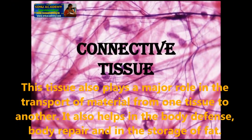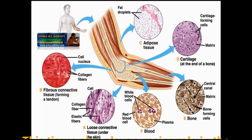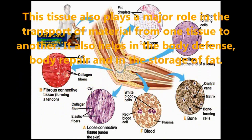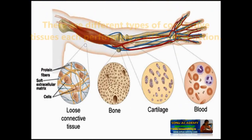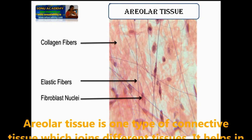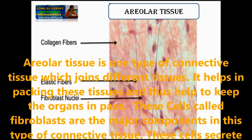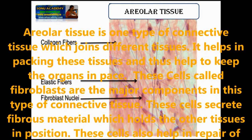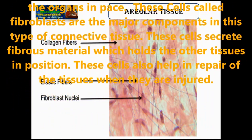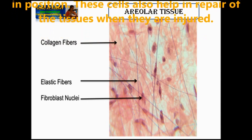Connective tissue helps in binding other tissues and organs together and provides a framework and support to various organs in the body. This tissue also plays a major role in the transport of material from one tissue to another. It also helps in body defense, body repair and in the storage of fat. It helps in packing tissues and keeps the organs in place. Cells called fibroblasts are the major components in this type of connective tissue. These cells secrete fibrous material which holds other tissue in position and also help in repair of injured tissues.